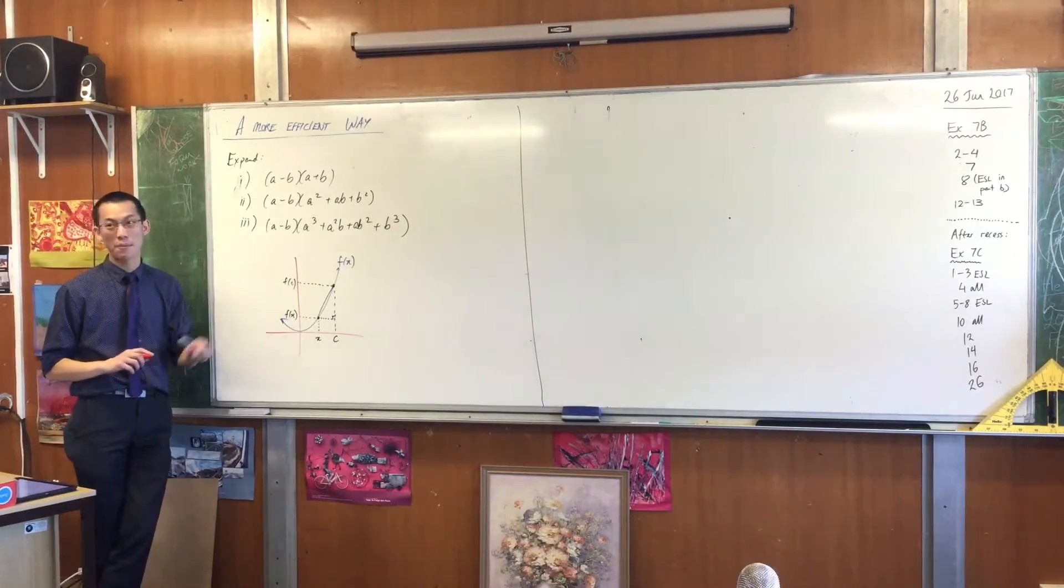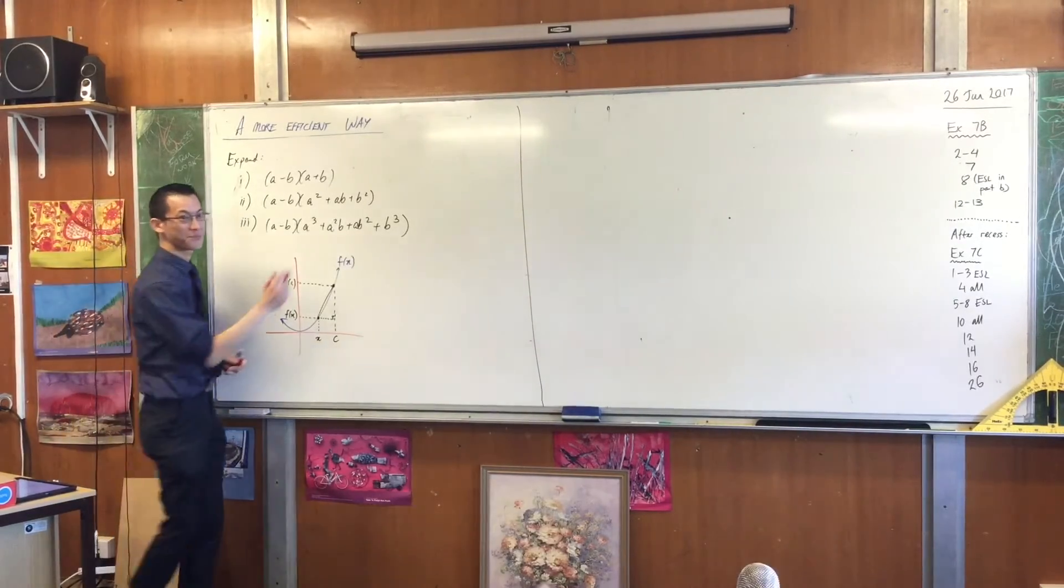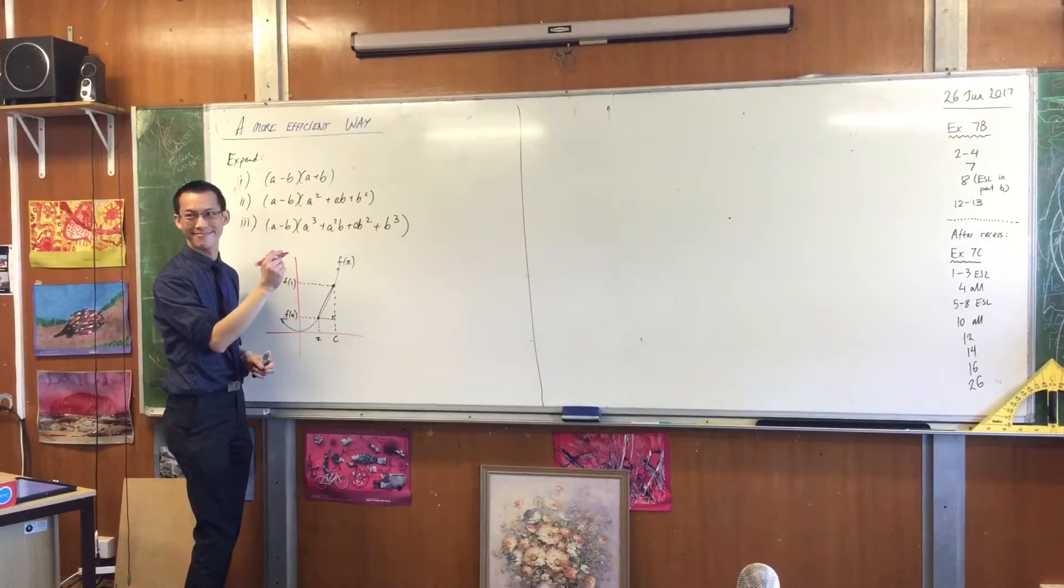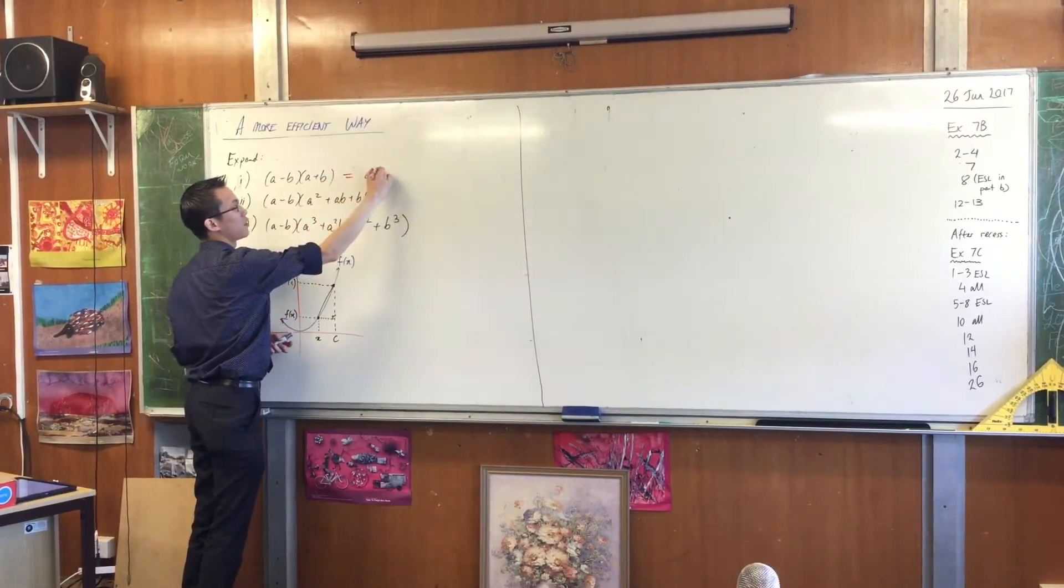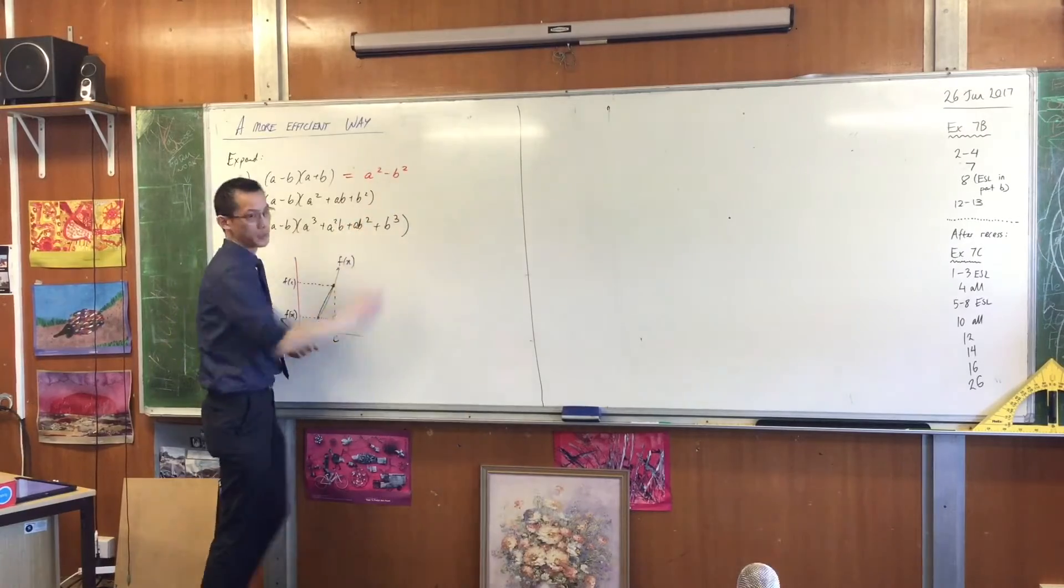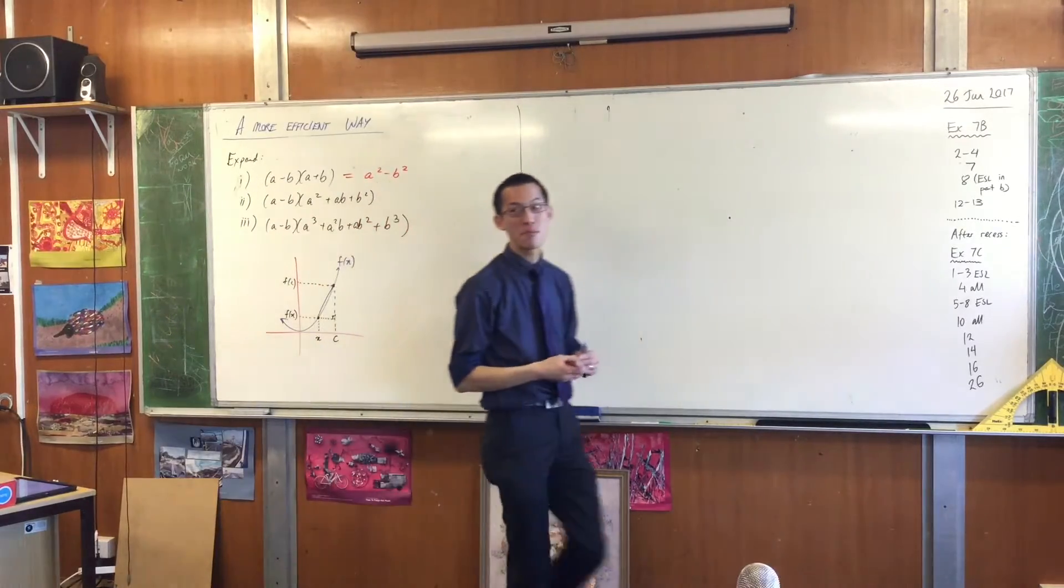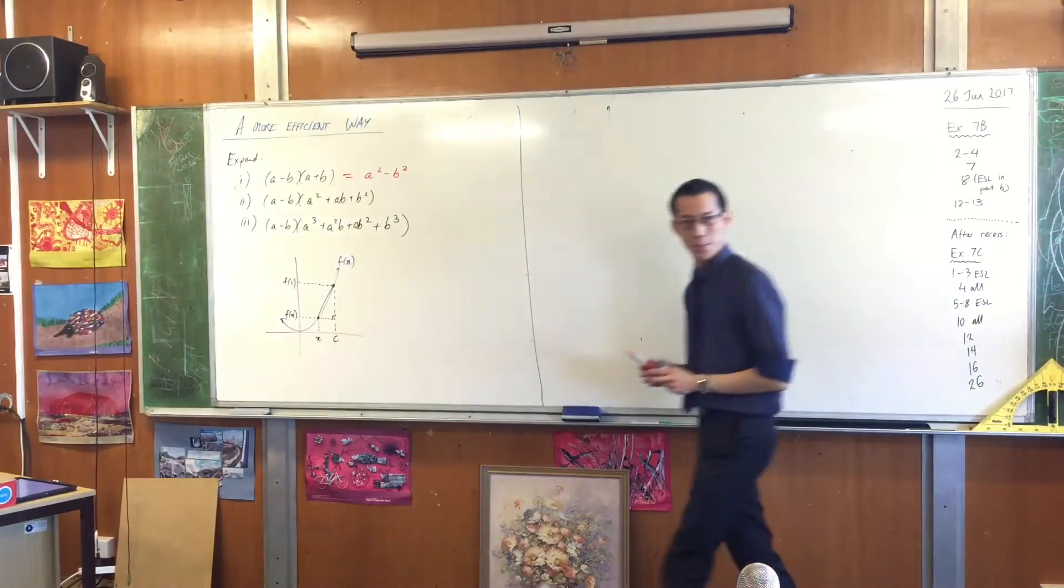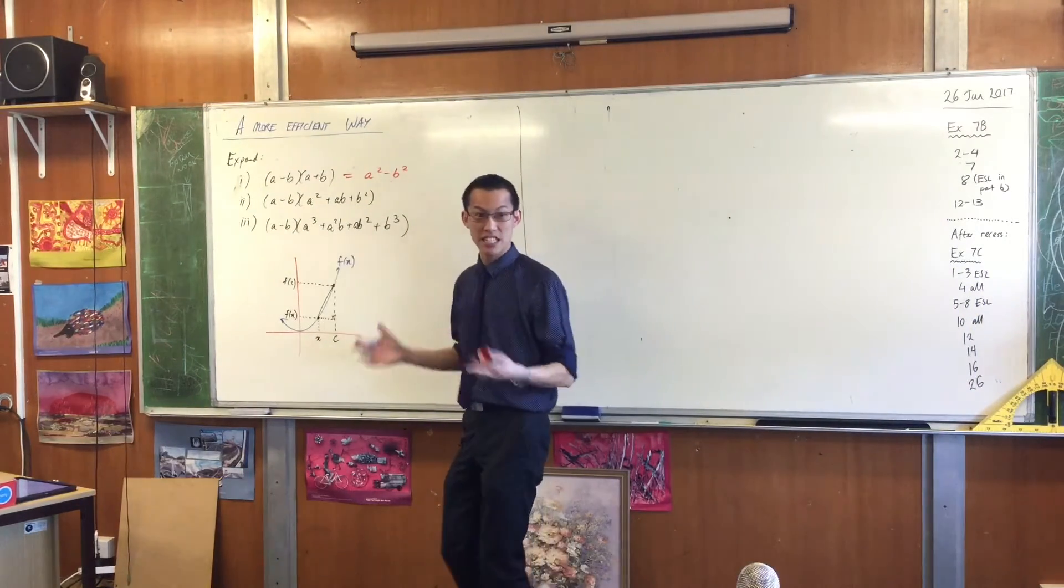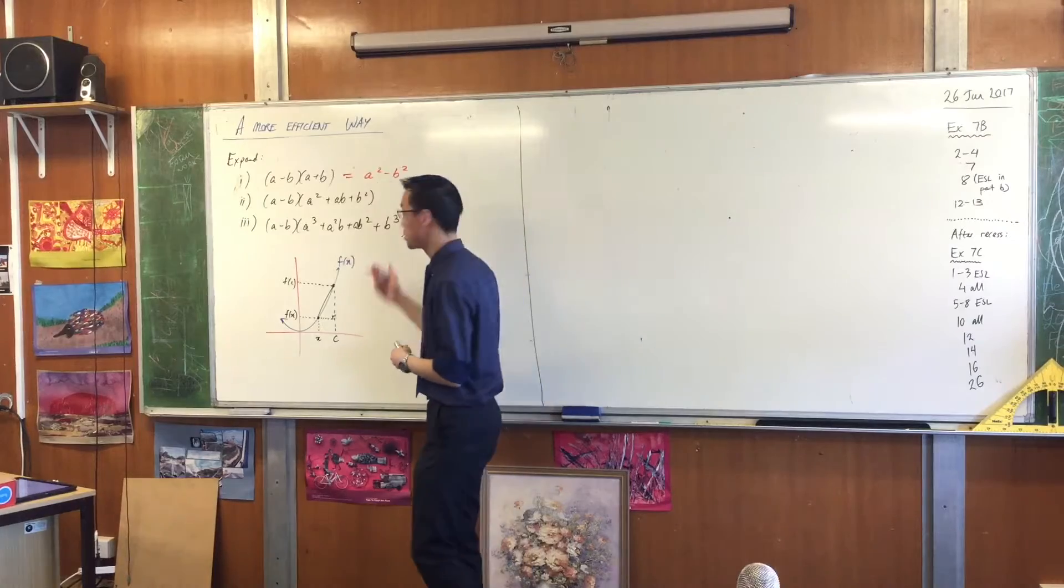When you expand the first pair of binomials, what do you get? You get a squared minus b squared, right? The difference of two squares. If you're really sharp today, you might also recognize the second one. What's the second one? It's the difference not of squares, the difference of cubes.